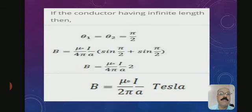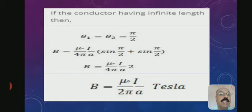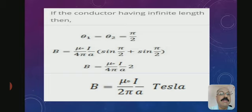For a special case where the conductor has infinite length, θ₁ = θ₂ = 90° (π/2). The equation becomes: B = (μ₀ / 4π) · (I/A) · (sin 90° + sin 90°) = (μ₀ / 4π) · (I/A) · (1 + 1) = (μ₀ / 4π) · (I/A) · 2. Therefore, the final expression for the magnetic field around an infinitely long straight current-carrying conductor is: B = μ₀·I / (2π·A), measured in Tesla.